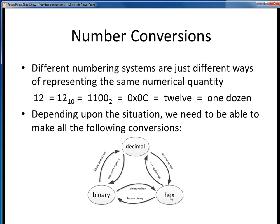Given the three numbering systems that we've discussed, depending upon the situation, we might need to perform any one of these six number conversions. So how would we go about doing each of these?